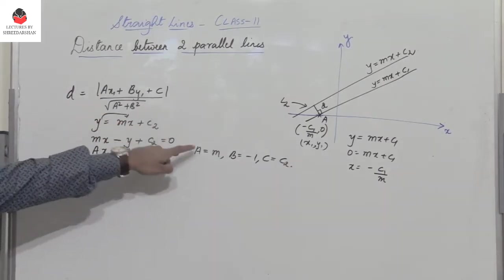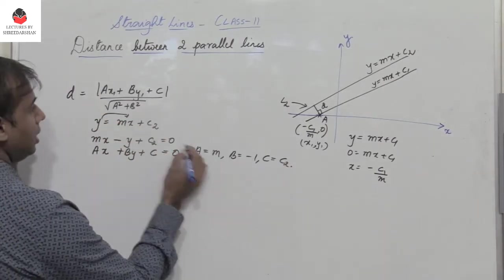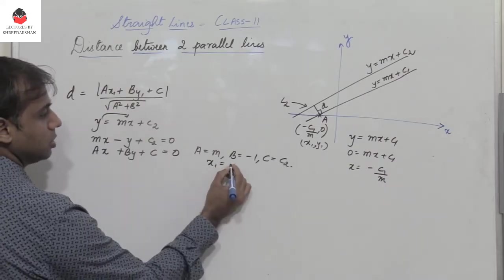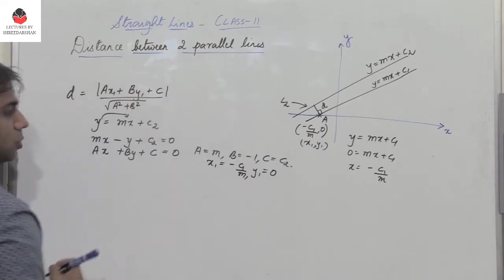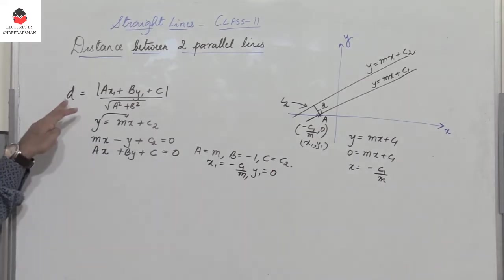So the value of a, b, c is known, and then you have x1 equals minus c1 by m and y1 equals 0. Now substitute these values in the expression, in the formula which is known to us.